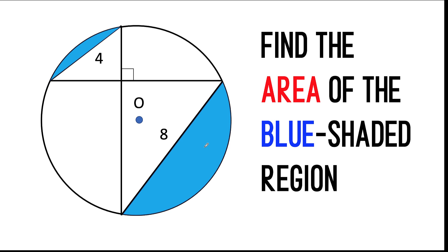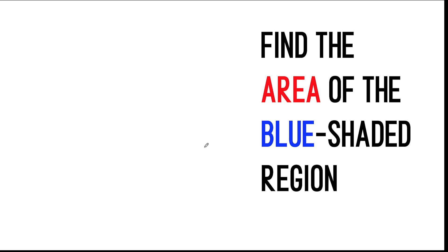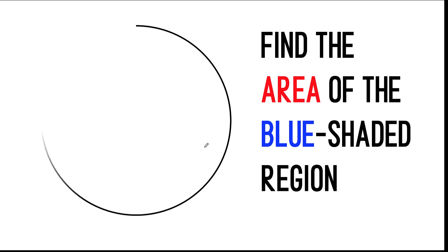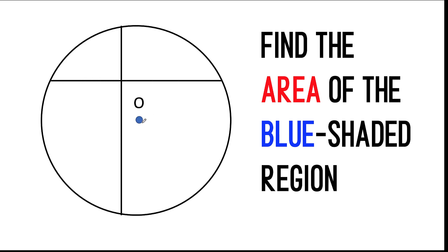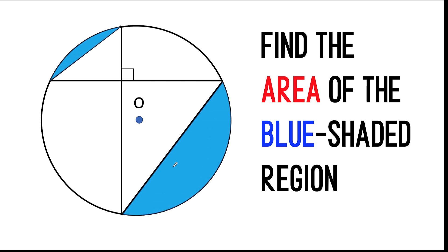Let's begin by analyzing its basic components. We start with a circle with center at point O and these two intersecting chords. They intersect at 90 degrees. Then we connect their endpoints this way and shade these blue shaded regions, along with these given measurements. So what is the combined area of these two blue shaded regions?